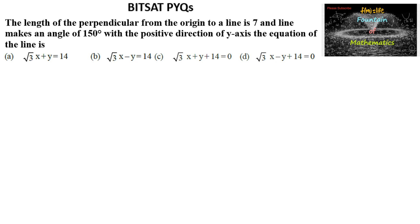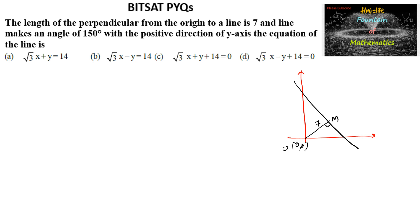The length of the perpendicular from the origin to the line is 7 units — let us call this OM. The line makes an angle of 150 degrees with the positive direction of the Y-axis. So the remaining angle with the Y-axis is 30 degrees, and since the axes are perpendicular, this gives 90 − 30 = 60 degrees from the X-axis side.